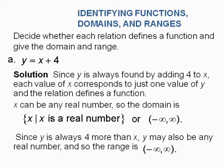Now, we're going to look at some of these here. Decide whether each function defines a relation and give the domain and range. Notice here we have the graph y equals x plus 4. It says since y is always found by adding 4 to x, each value of x will correspond to just one value of y, and the relation defines a function. If we put 0 in for x, y would be 4. If we put 1 in for x, y would be 5, and this would be the picture of our friend the line. Since it's a line we have negative infinity to infinity both for the domain and the range.